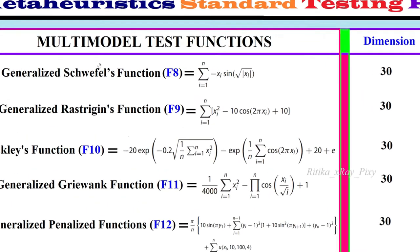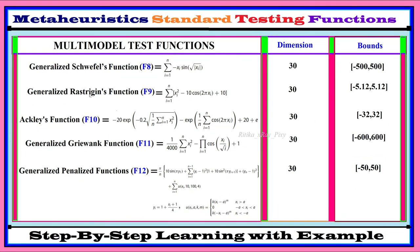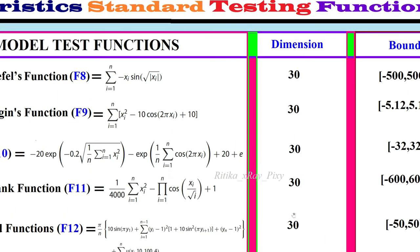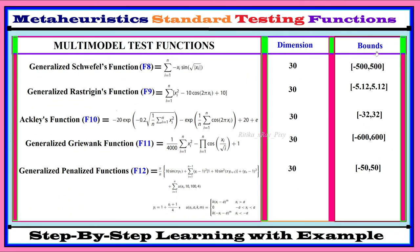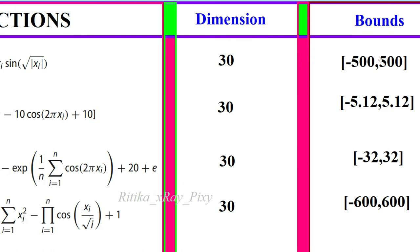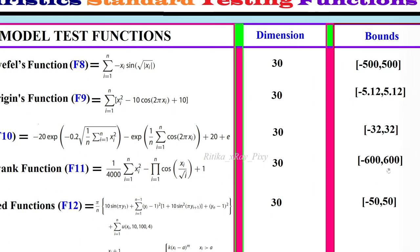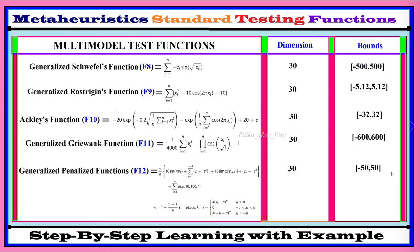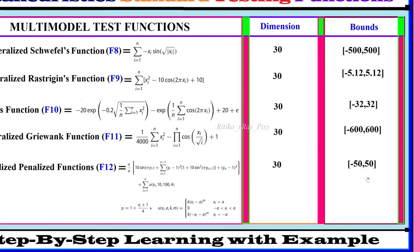Next, we have multimodal test functions. Multimodal test functions are used to check algorithm global search and local search capabilities. Here you can see different types of multimodal test functions used for comparison, along with the dimensions and search space boundaries for each. For F8, the lower bound is minus 500 and upper bound is 500. For F12, the lower bound is minus 50 and upper bound is 50.